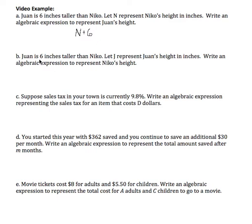For Part B, same thing. Juan is 6 inches taller than Nico. Now we're letting J represent Juan's height. We want to write an algebraic expression to represent Nico's height. So if Juan is J and he is 6 inches taller than Nico, whatever number this is, to get Nico's height, we need to take Juan's and we need to subtract 6. So there's our expression that represents Nico's height.